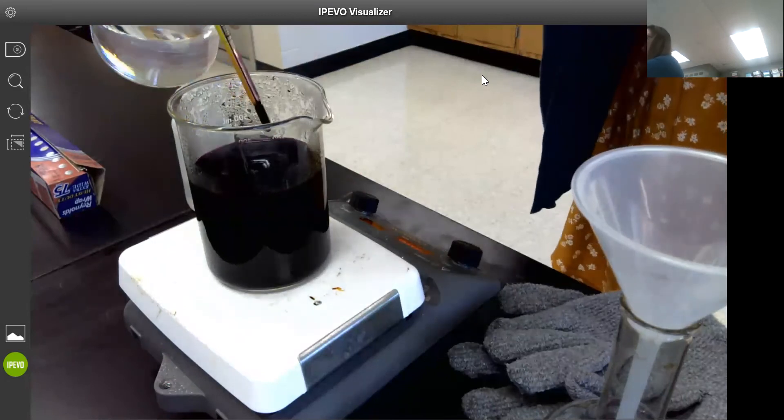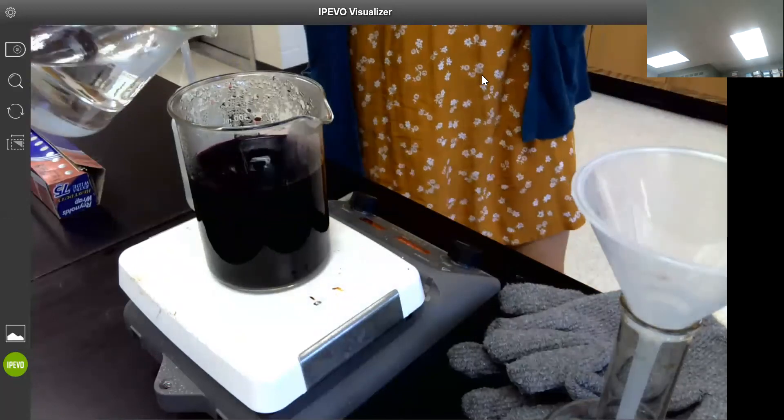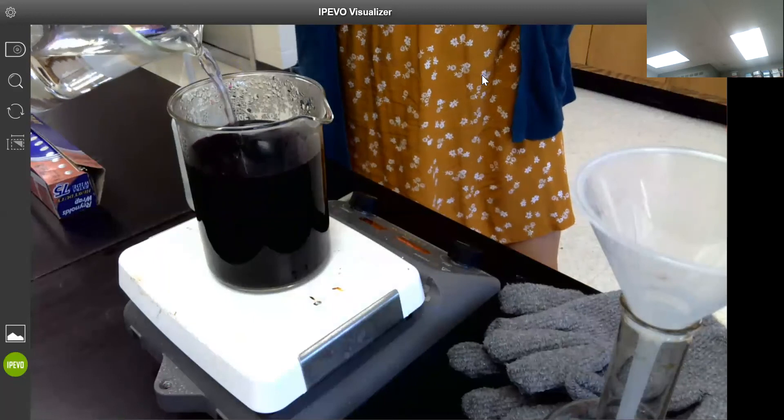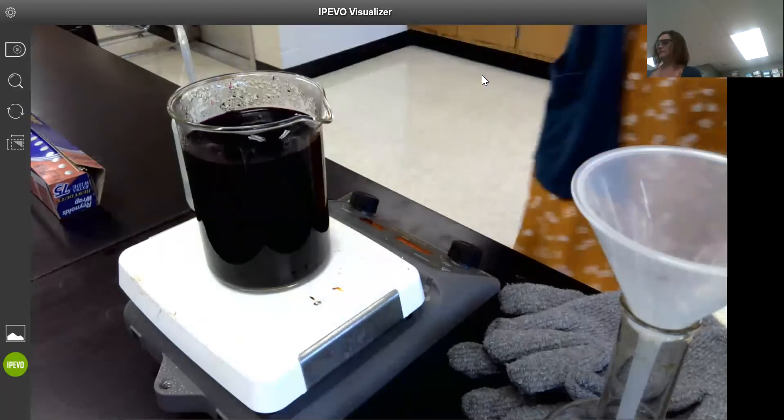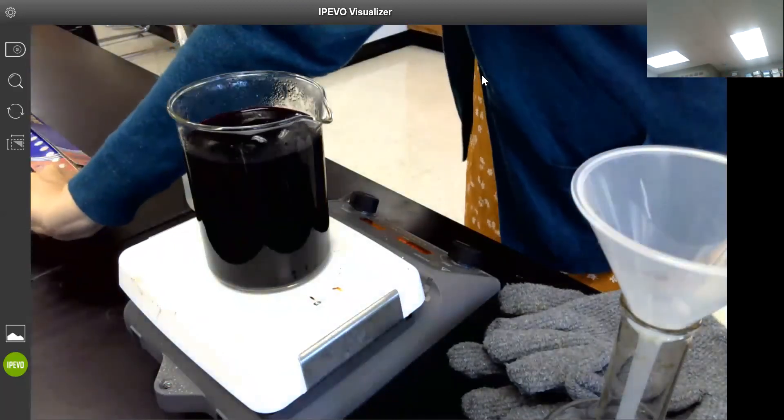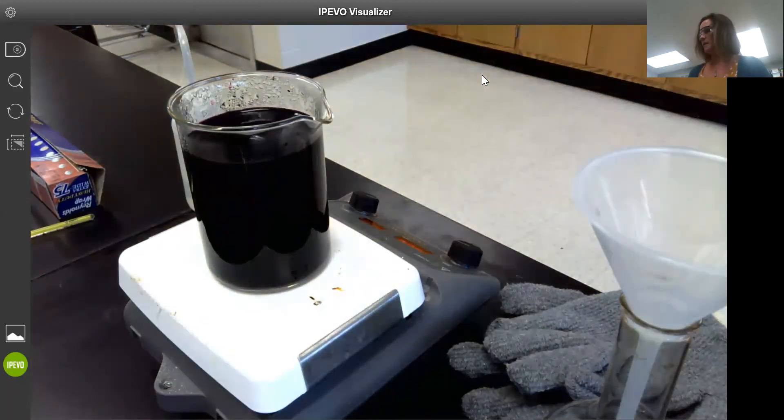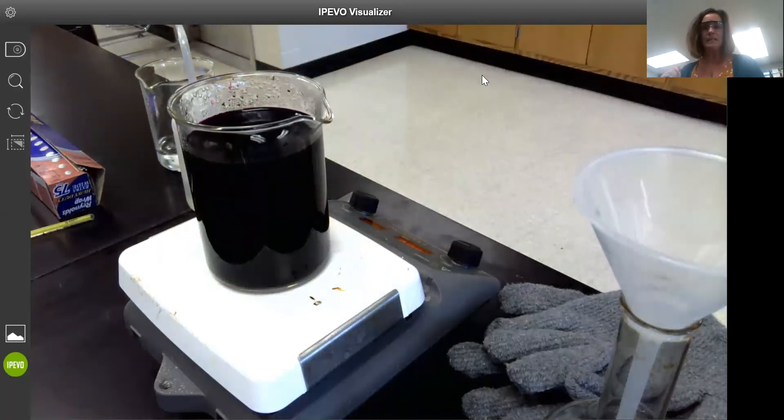Just using the lines on the beaker, I'm going to add enough water to get up to about 500 milliliters. Again, none of this really matters as to how much water we're adding because we are going to be standardizing the solution, and so we will eventually be determining its exact concentration.